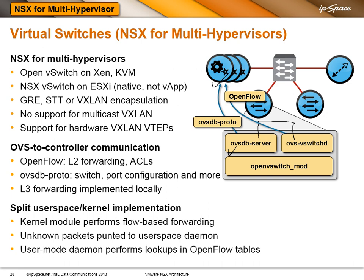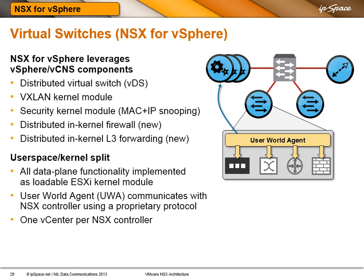Open vSwitch has a split user-space/kernel-space implementation. The kernel module does only flow-based forwarding; when an unknown flow arrives, the packet is punted to the user-space daemon, which looks up OpenFlow tables or layer 3 tables and installs new flow forwarding information into the kernel module, so subsequent packets of the same flow go straight through the kernel. On the vSphere side, there is no Open vSwitch — NSX for vSphere uses the existing distributed virtual switch with the VXLAN kernel module from VCNS, the existing security module for MAC and IP SourceGuard, and two new kernel modules for firewalling and layer 3 forwarding. All data plane functionality is in these kernel modules with no punting to user mode; the only user-mode module is the user world agent that communicates with the controller.